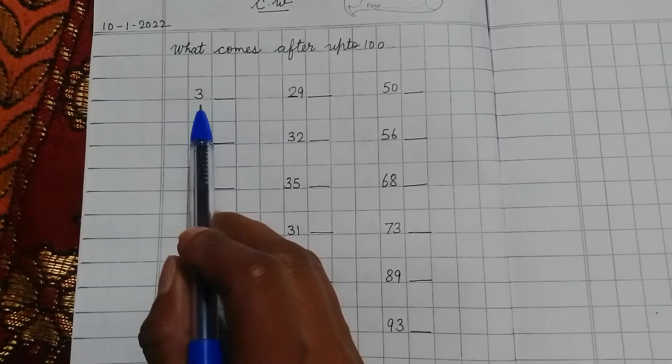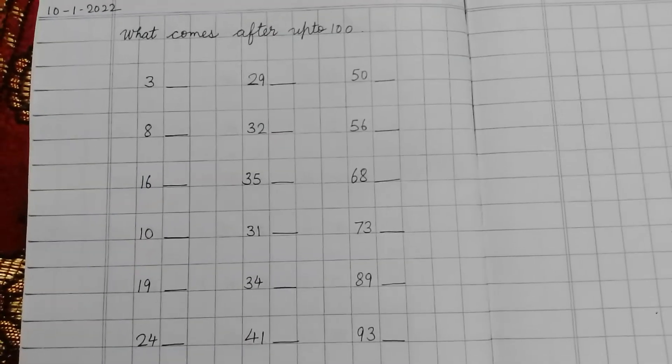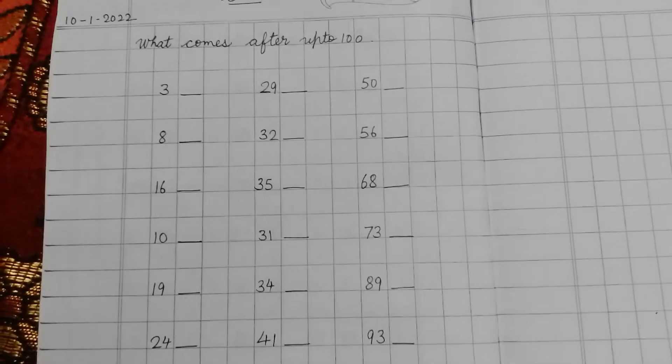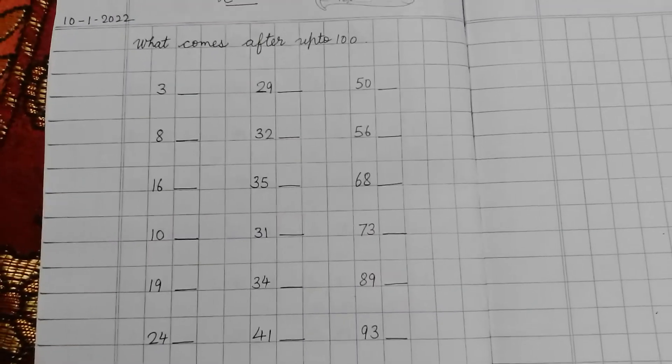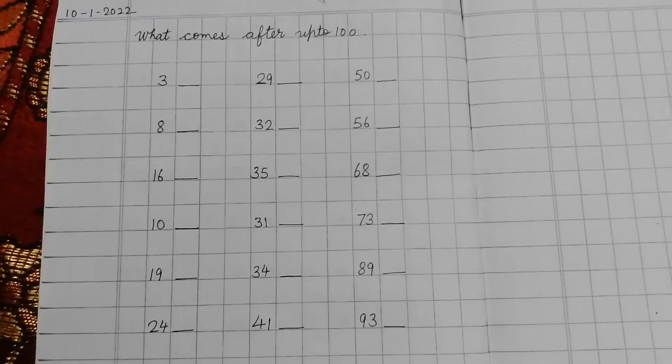This is the number 3. So after 3 which number will come. If you have counted done then you can do easily. Forward counting we say 1, 2, 3, 4.